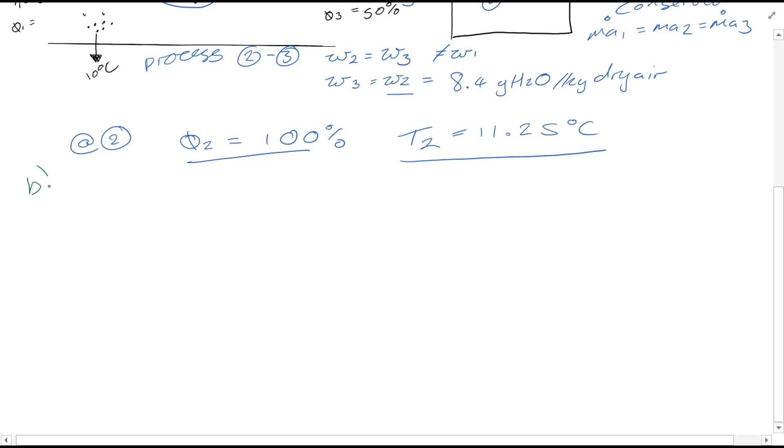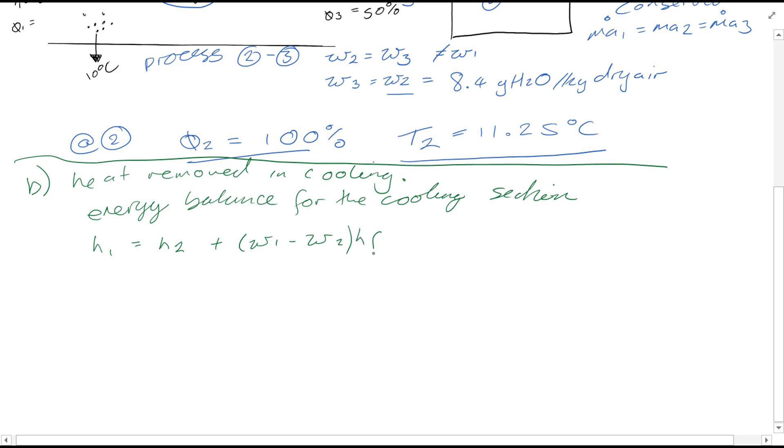Okay, so we'll change the color of my pen and we'll have a look at part b. Part b wants to know the heat removed in cooling. So if we look at the energy balance for the cooling section, you can see h1 equals h2 plus (w1 - w2) times hf at 10 degrees Celsius plus q_cooling. So just breaking down this equation a bit more, you can see that this relates here to humidification, this is to do with cooling, this is the enthalpy at point one, and this is the enthalpy at point two.